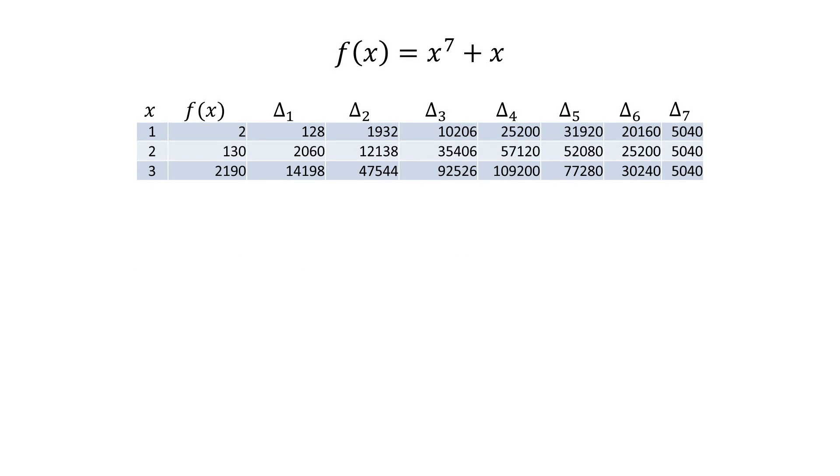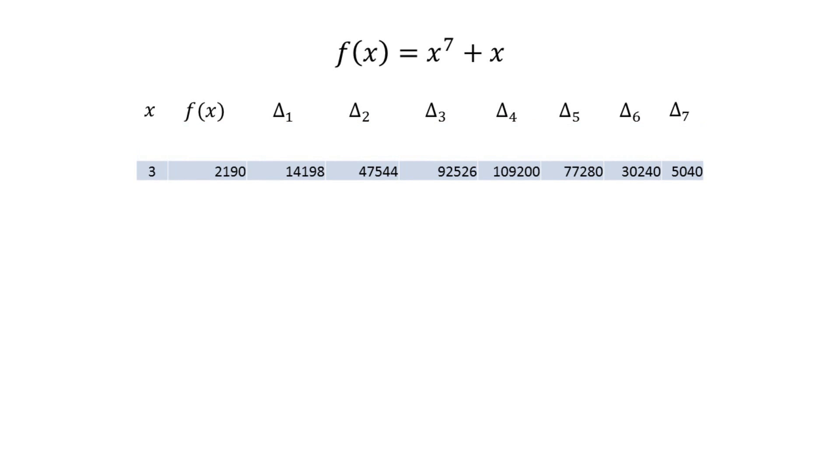A property of the method of finite differences is that each row can be calculated using only the previous row. You don't need to remember any rows before that.